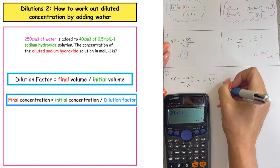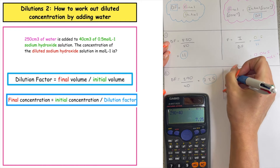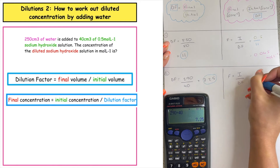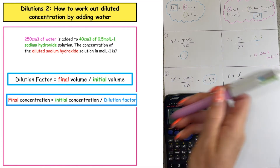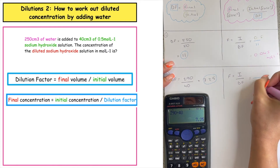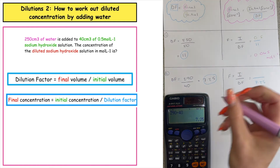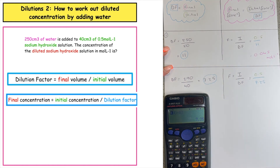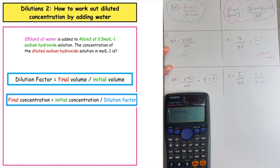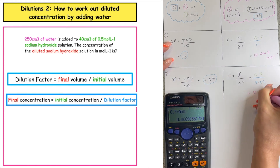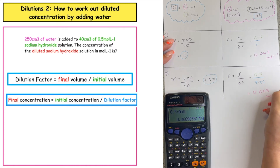The second step is to work out the final concentration, which is equal to the initial concentration over the dilution factor. The dilution factor is 7.25 and the initial concentration is 0.5 moles per litre. So 0.5 divided by 7.25 gives a final concentration of 0.069 moles per litre.